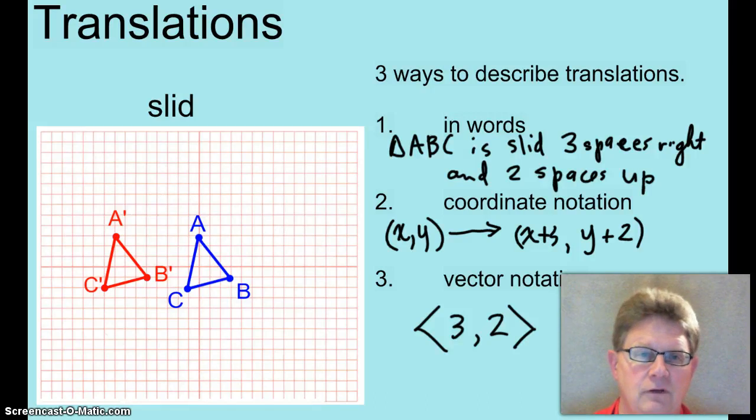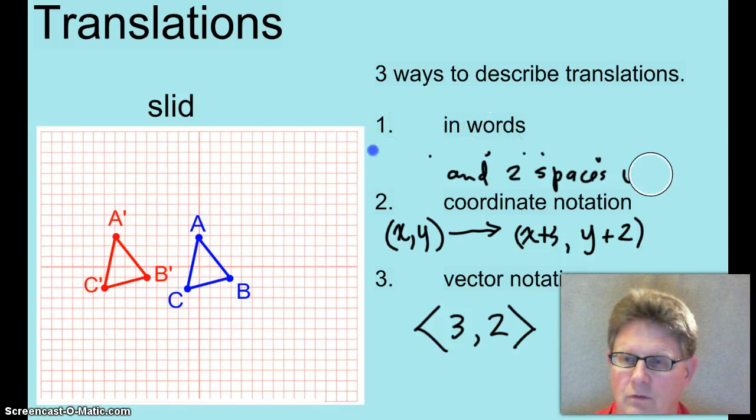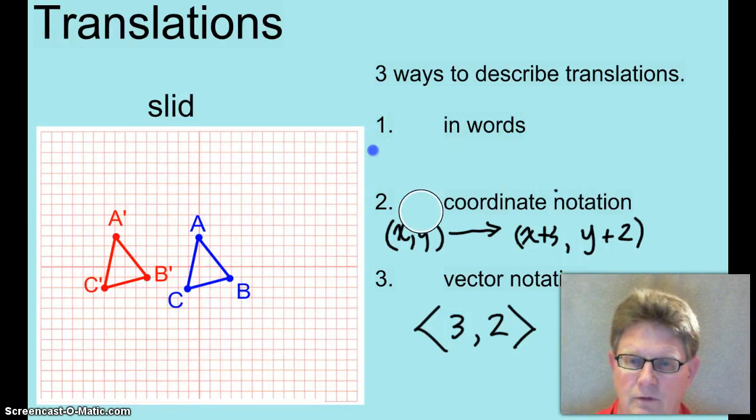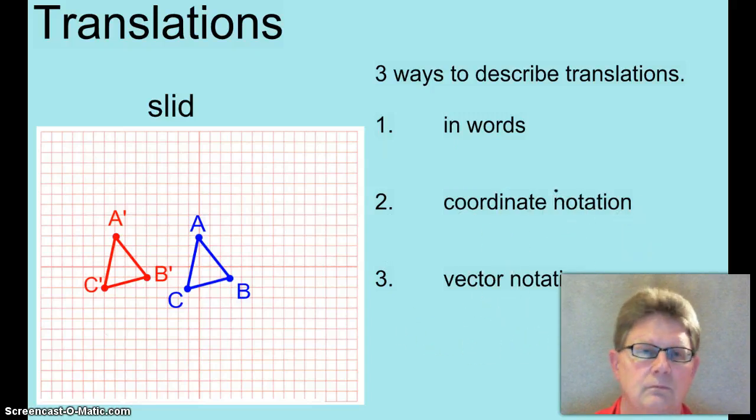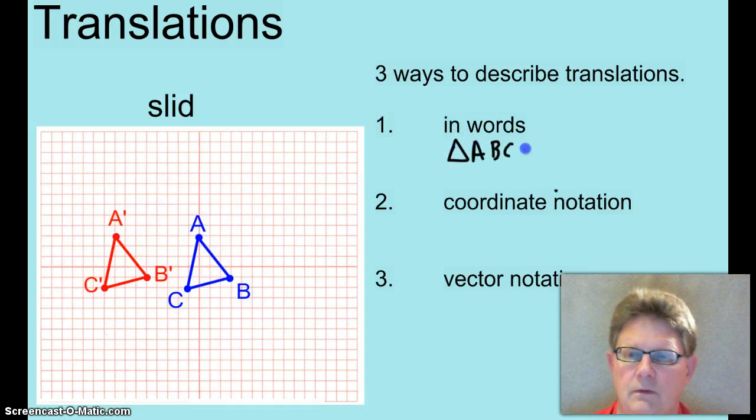So, let's go ahead and erase this. And we'll write some new stuff. Triangle ABC is slid eight spaces left.